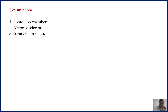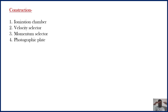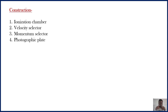The last part is the photographic plate. As the ions take circular paths in the momentum selector, the ions strike the photographic plate. As soon as the ions or charged particles strike the photographic plate, a line is marked on it. The number of lines on the photographic plate gives us the number of isotopes for the given particular material.